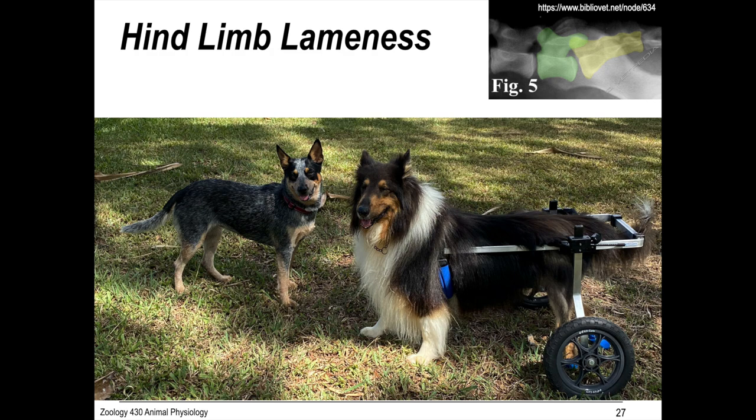Degenerative myelopathy is what they proposed at first, which is basically a disease of the spinal cord that eventually results in total paralysis, like ALS. But it's a rare disease, and his tail is just fine.